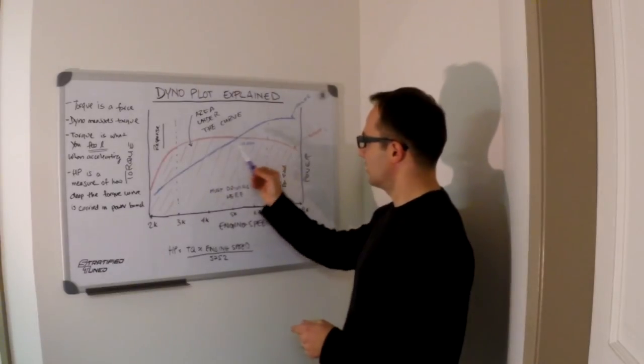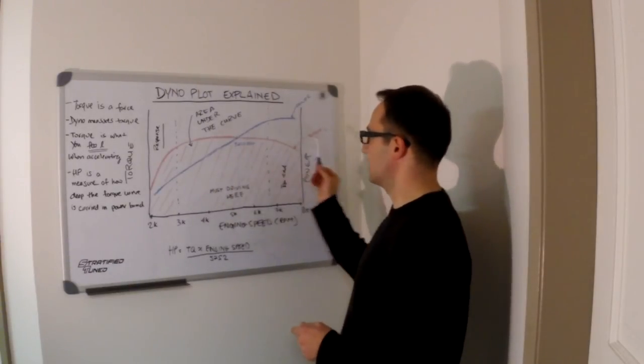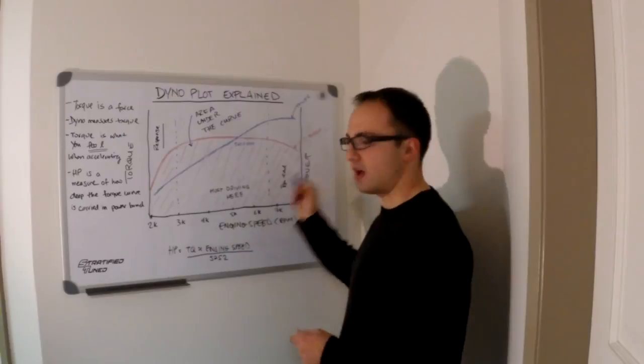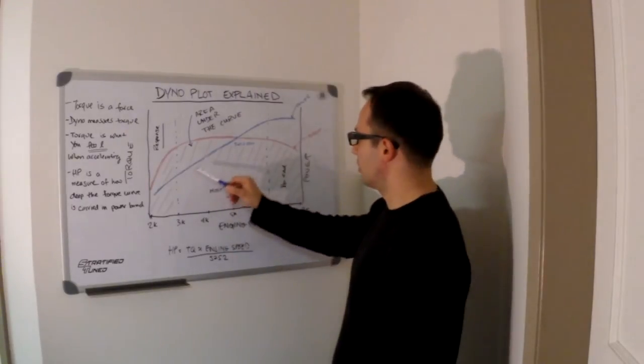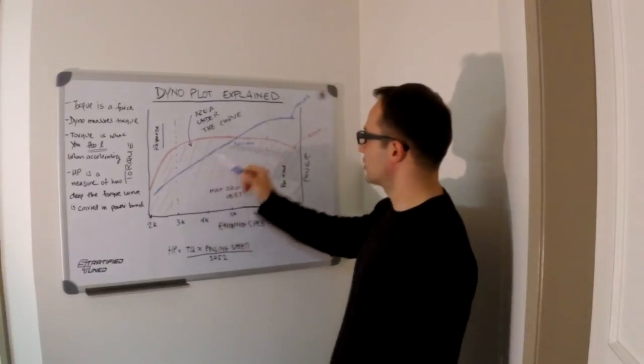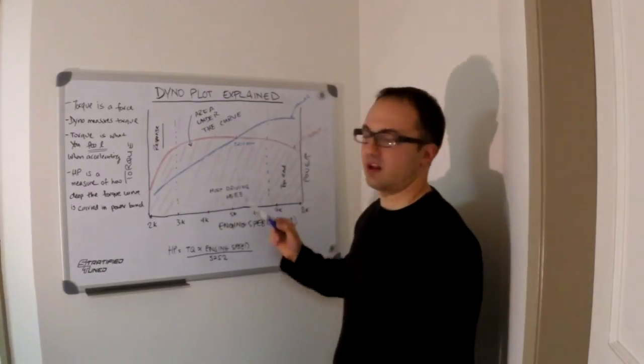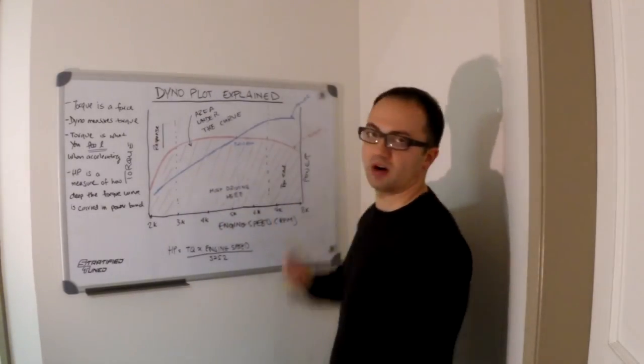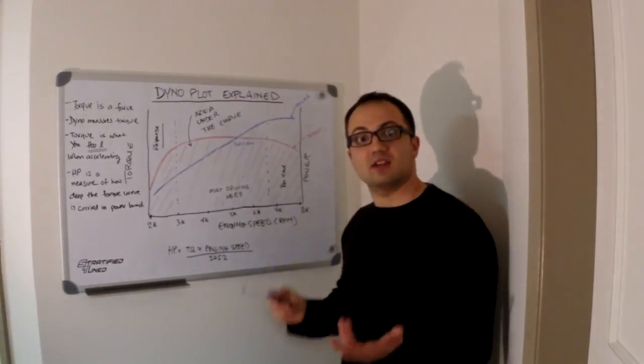You want the flat torque curve, and if your torque curve stays flat all the way to red line, which is ideal, your power curve, your horsepower curve will continue climbing as a straight line all the way to red line, and you'll make peak horsepower at red line. That is the ideal scenario.